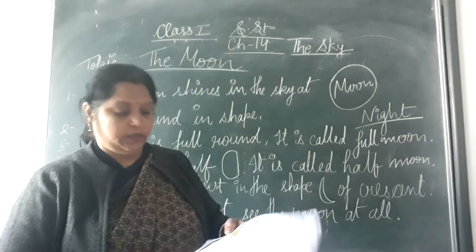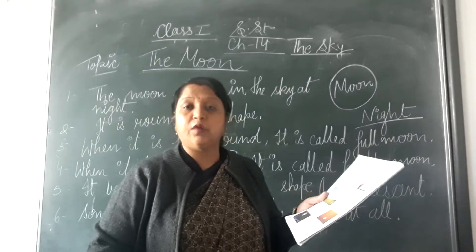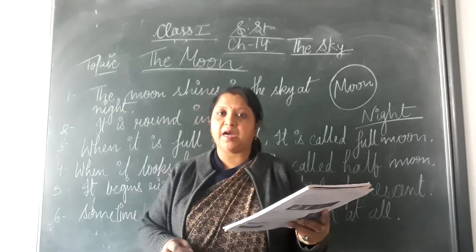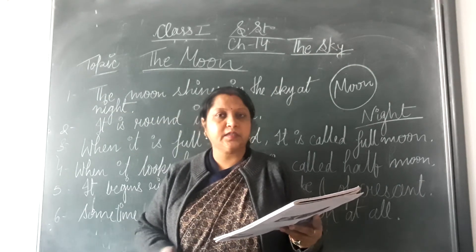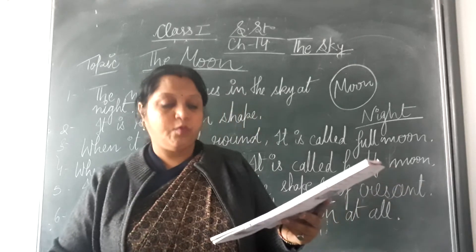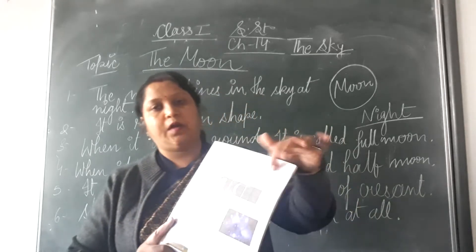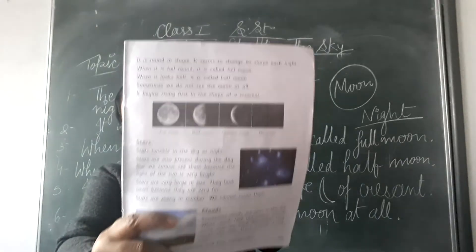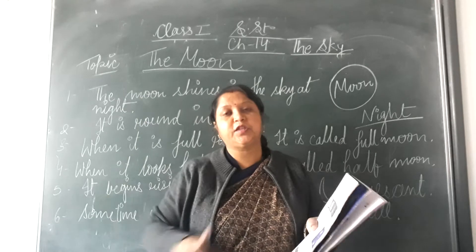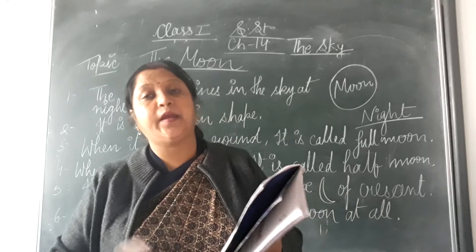Let's read the chapter. Page number 58. Put your index finger. The Moon — all of you speak along with me. The moon shines in the sky at night. When does it shine — on day or night? Night. Sometimes we see the moon during the day — sometimes means kabhi kabhi. Page number 59. It is round in shape. What is the shape of moon? Round. It seems to change its shape each night.